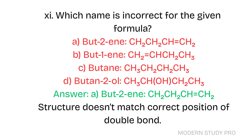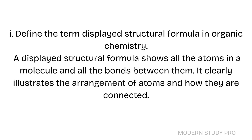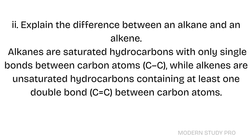Question 11: Which name is incorrect for the given formula? Answer: But-2-ene. The structure CH2=CH-CH2-CH3 doesn't match the correct position of the double bond. Short Question 1: Define the term 'displayed structural formula' in organic chemistry. A displayed structural formula shows all the atoms in a molecule and all the bonds between them, clearly illustrating the arrangement of atoms and how they are connected. Short Question 2: Explain the difference between an alkane and an alkene. Alkanes are saturated hydrocarbons with only single bonds between carbon atoms (C-C), while alkenes are unsaturated hydrocarbons containing at least one double bond (C=C) between carbon atoms.